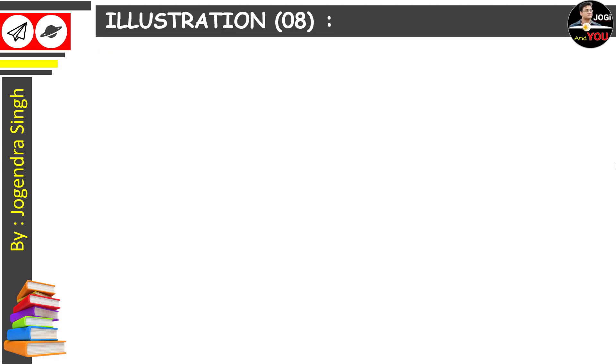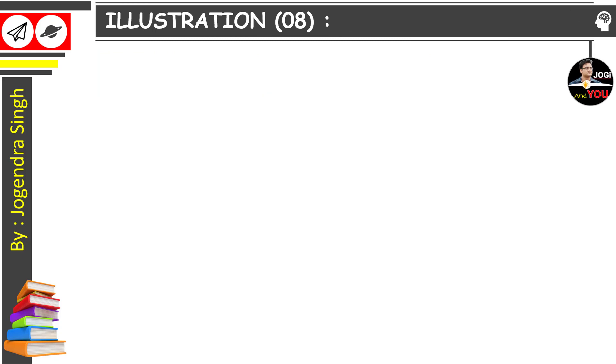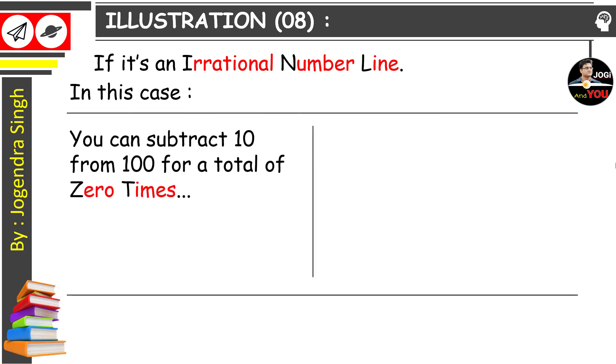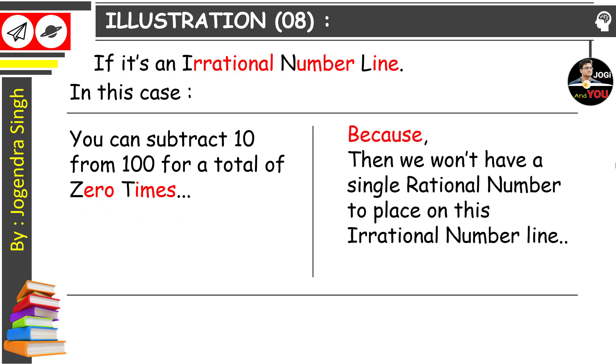Okay, then it's time to talk about illustration number 8. If it's an irrational number line, in that case you can subtract 10 from 100 for a total of 0 times. Because it's an irrational number line, so that we won't have a single rational number to place on this irrational number line, just like 100, 90, 80 and so on. So we leave them out.